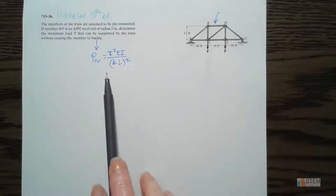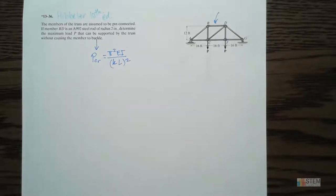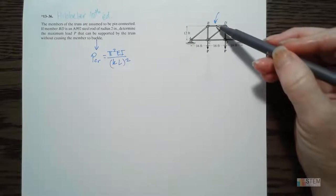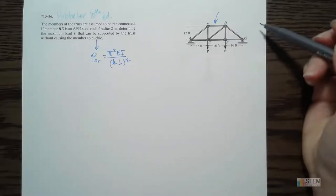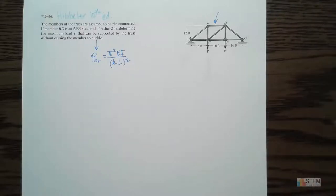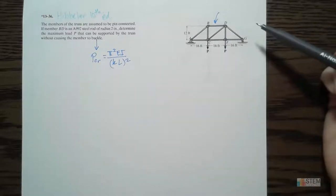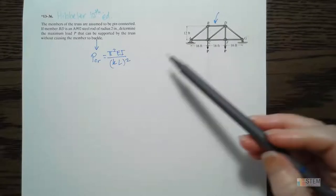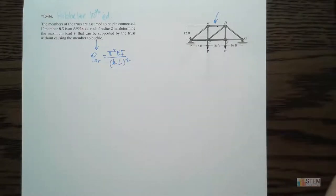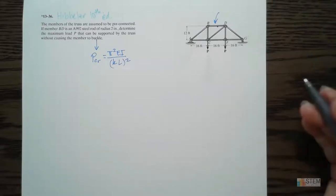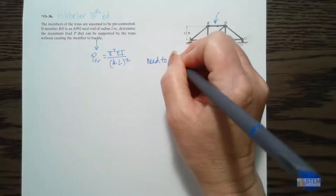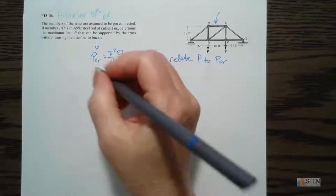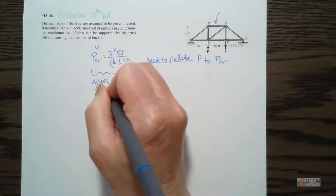We need to figure out how to use this. We've got these applied loads P pulling down, and we don't want buckling in member BD. When you think about buckling, think of it as failure in the member — we don't want to go beyond the critical load, because once we reach it and beyond, we're going to have failure. So P_CR gives us the max force we can have in member BD, and I need to relate that to the applied force P.